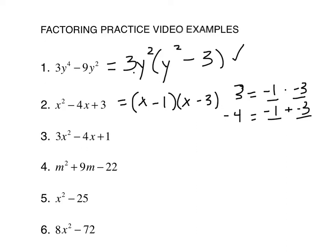Double check it by multiplying it out, but we're basically done with that. All right, good, next one. Okay, so GCF, 3, 4, and 1, nope, no GCF. Okay, but this one does not have a 1x squared, it has a 3x squared.